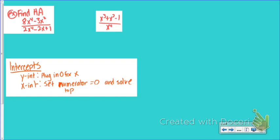Now let's practice finding horizontal asymptotes. For this first example, I need to look at the degree of the top and the degree of the bottom. The degree of the top is 4, and the degree of the bottom is also 4. Since the degrees are equal, my horizontal asymptote is leading coefficient over leading coefficient, which would be y equals 4. For the next example, the degree of the top is 3 and the degree of the bottom is 4 — bottom-heavy — so the horizontal asymptote is y equals 0.